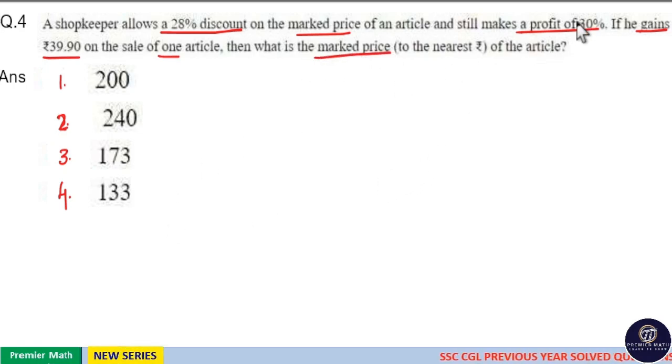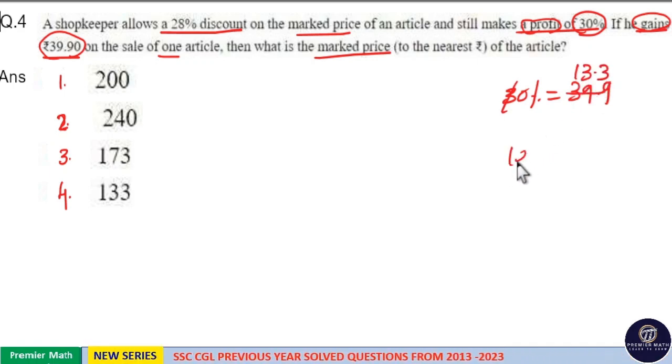Here profit is same as gain, so profit is 30% and gain is ₹39.90, which means 30% profit equals ₹39.90. Now 10% equals ₹13.30, which means 100%, the cost price, equals ₹133.